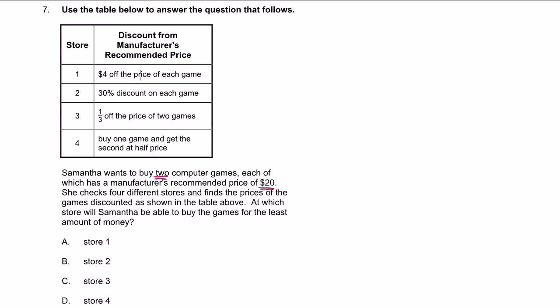So this is $4 off the price of each game. Remember, she's buying two. The manufactured price is $20. So she's going to pay $4 off of $20 for each game. So she's going to pay 16 plus 16, which is equal to 32. That's at store number 1.